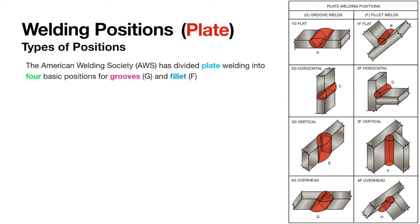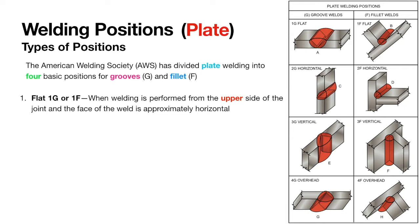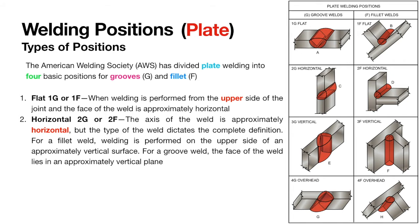Both groove and fillet welds are divided into flat position which is 1G for groove, G means groove and F means fillet. 1G or 1F corresponds to flat position, 2G/2F corresponds to horizontal position, 3F and 3G corresponds to vertical position, and there is overhead position which is called 4G and 4F.